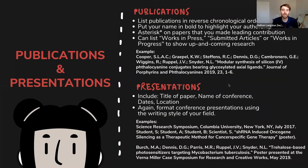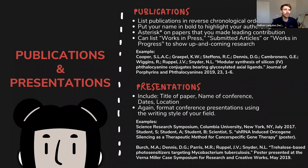One final section common on CVs is publications and presentations. When citing publications you've authored or co-authored, it's best to stick with the preferred citation style of your discipline — either APA or MLA. A few key takeaways: list your publications in reverse chronological order, most recent to past; put your name in bold to highlight your authorship; you can put an asterisk on papers where you made a leading contribution; and if you have works currently in progress, you can include those on a CV to showcase something you've been working on. We have an example of that here.